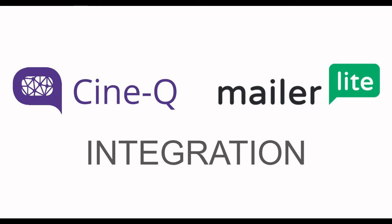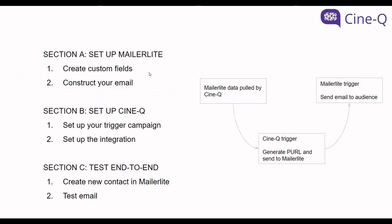Hey everyone. In this video we're going to take a look at how to set up a closed loop integration between CineQ and MailerLite so that you can generate and send out personalized videos using MailerLite. There will be three sections that we're going to cover: first, how to create custom fields and construct your emails in MailerLite; then we'll set up a trigger campaign in CineQ as well as the integration itself; and finally we'll go back to MailerLite, create a new contact, and do a test run.